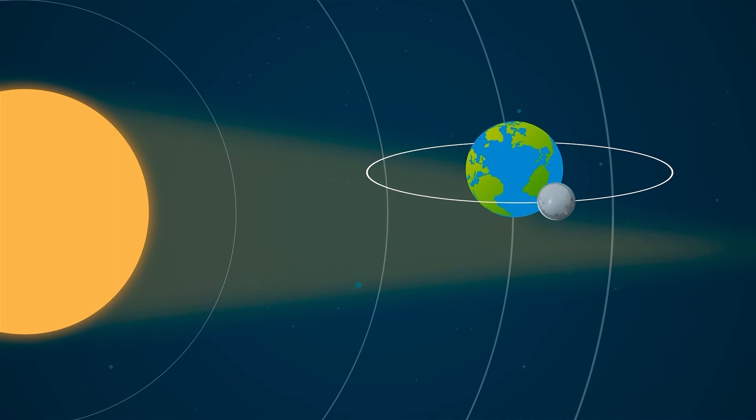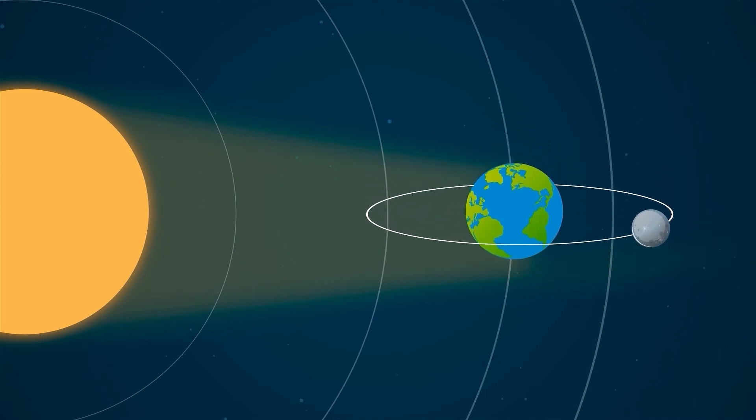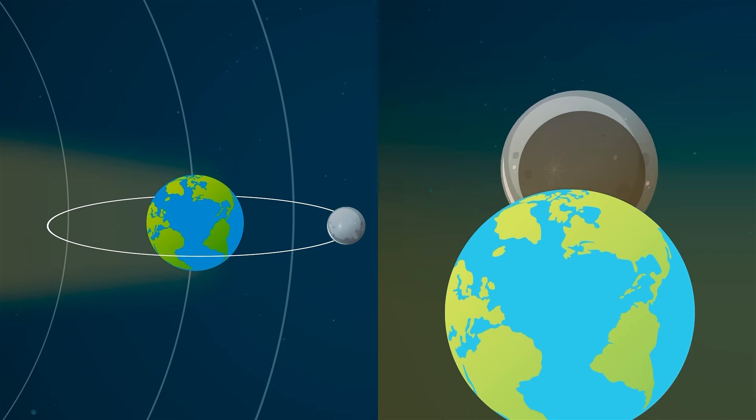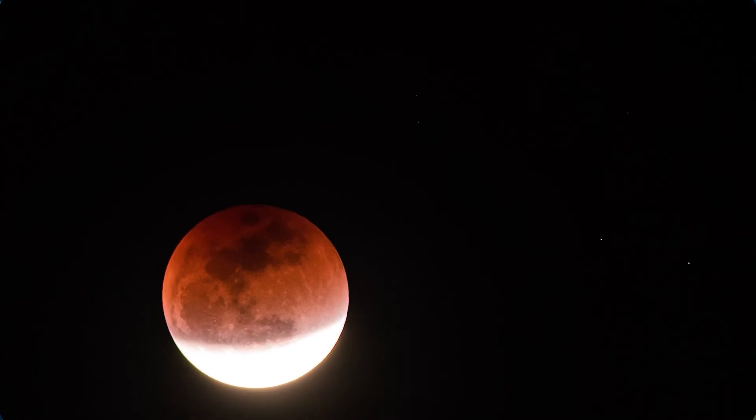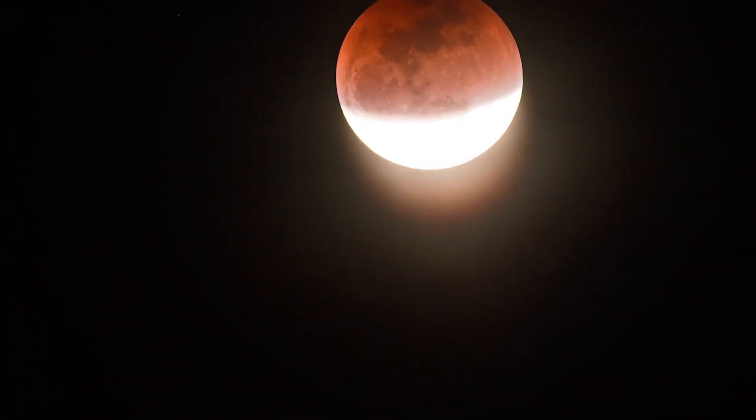A lunar eclipse, on the other hand, happens when the earth comes between the sun and the moon. The earth blocks the sun's light which would normally reflect off the moon. Instead, the earth's shadow falls on the moon, causing it to look dark and often take on a red color due to sunlight bending or refracting around the earth.